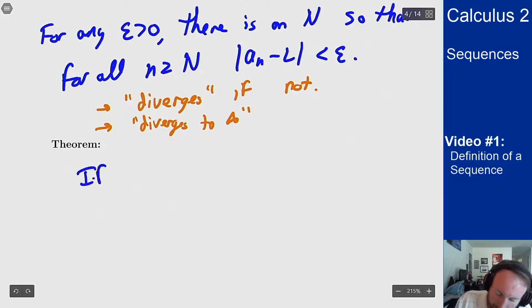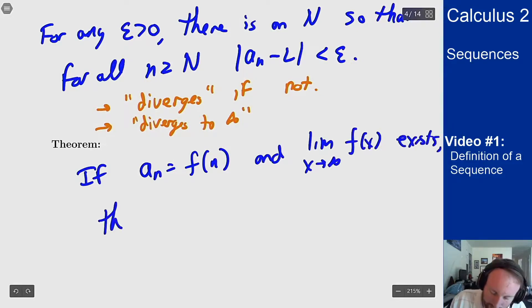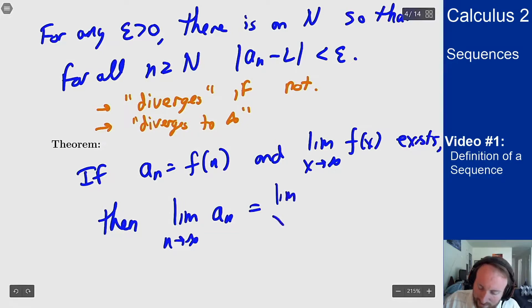If a sequence an is defined by some function of n and the limit as x goes to infinity of f of x exists, then limit as n goes to infinity of an is the same as the limit as x goes to infinity of f of x.